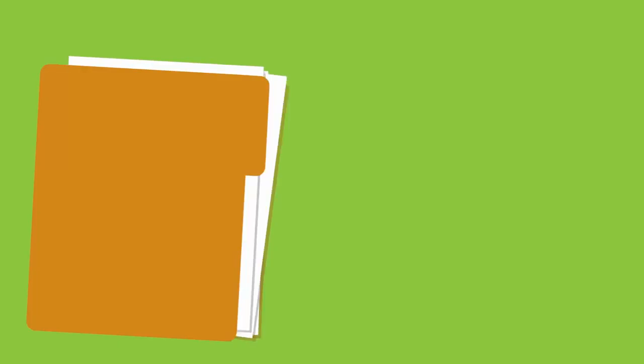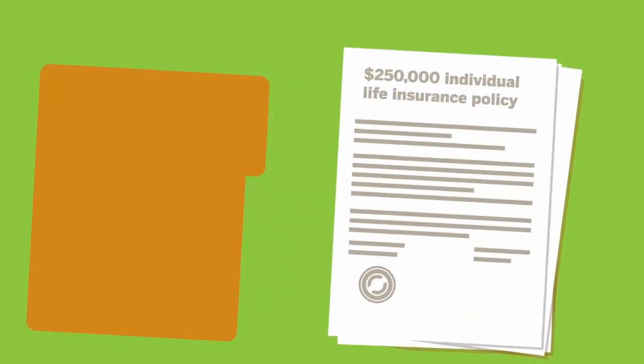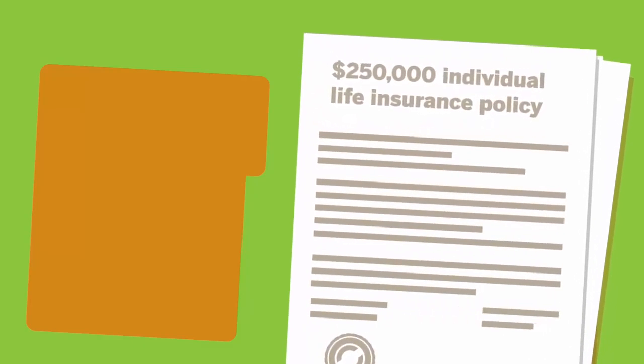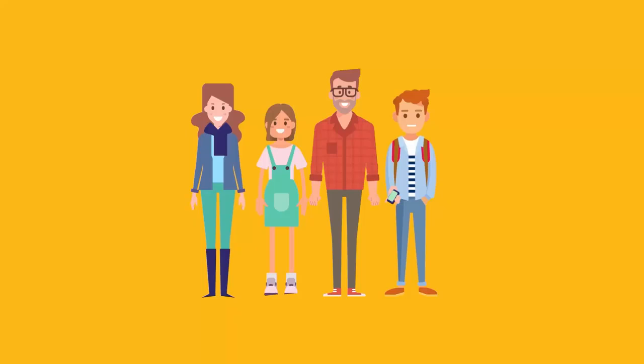Here's how it works. Gwen owns a $250,000 individual life insurance policy that she bought a few years ago. But now that she has a family, she knows that's not enough.